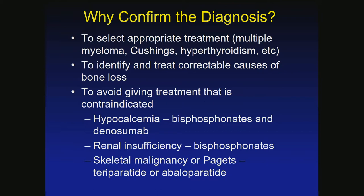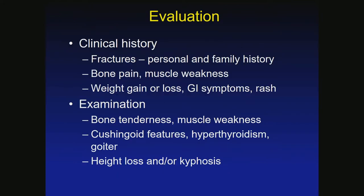And if someone has a skeletal malignancy or Paget's disease, we don't want to treat with a bone-building agent like teriparatide or abaloparatide. There is reasoning behind confirming a diagnosis first. Also, our drugs work better if we treat the vitamin D deficiency and get them on calcium first, or at least at the same time. When we evaluate our patients, we ask about fractures, bone pain, muscle weakness, weight change, GI symptoms, and rash.